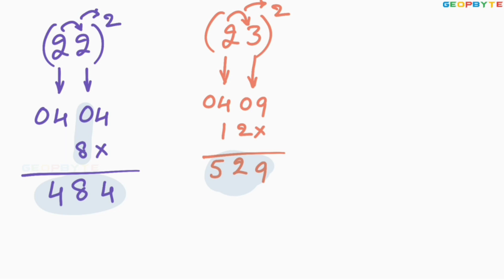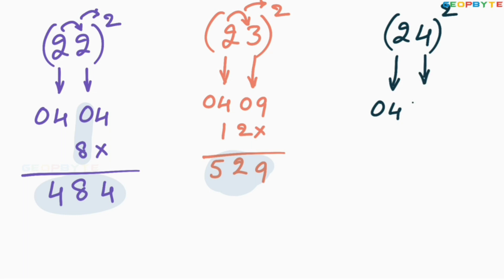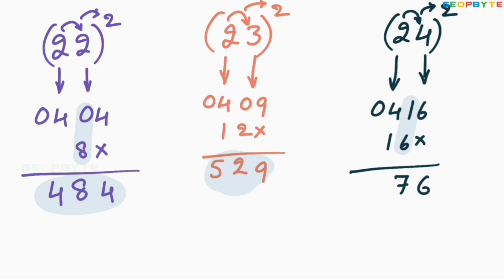Similarly, let us move to the 24 whole square. 2 square is 04, 4 square is 16. Then 2 into 4 is 8, 8 into 2 is 16. Leave the first space, write 16 here. Add these two values: 6, 1 plus 6 is 7, 4 plus 1 is 5. Therefore, 24 whole square is equal to 576.